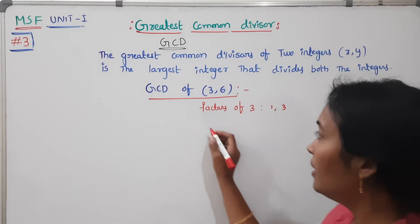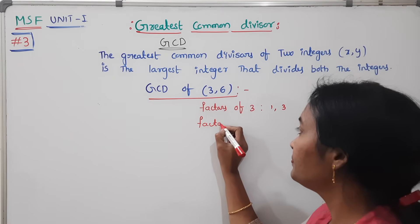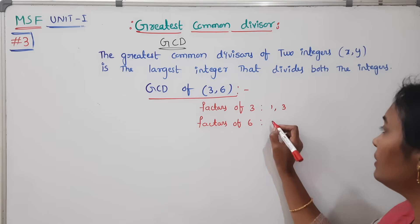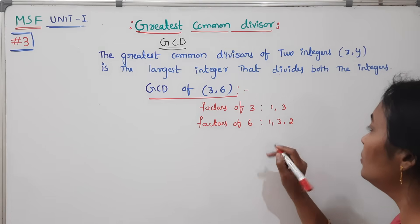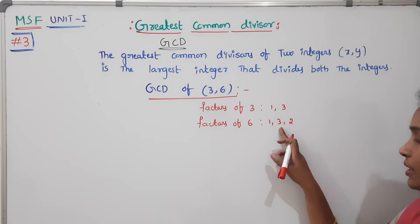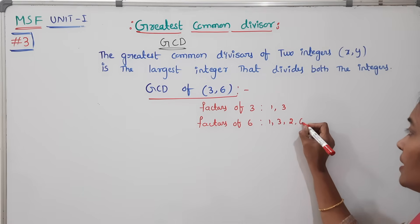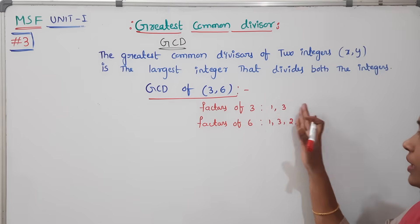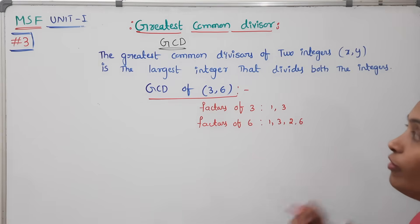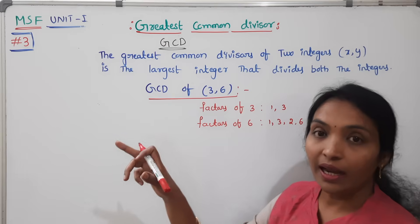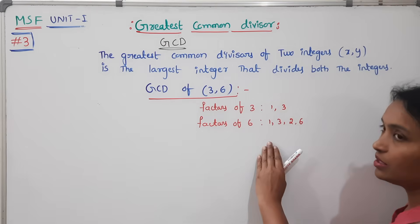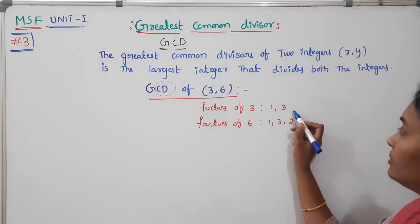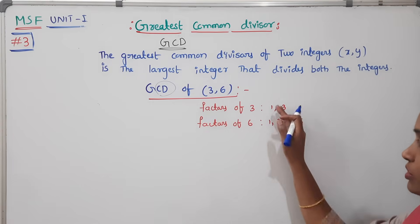Now find the factors of 6. The factors of 6 are: 1, 2, 3, and 6. These are the factors of 3 and 6. Now for GCD, we need to find the common factors of both. The common factors are 1 and 3 — these are repeated in both.